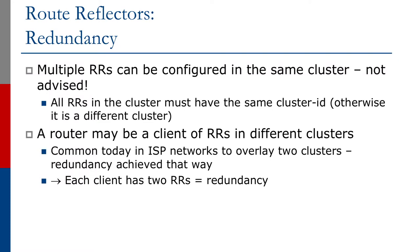Multiple route reflectors can be configured in the same cluster, but in practice this has been quite problematic. It works fine as long as the two route reflectors have a direct physical connection between each other, which is usually the case. However, problems arise when route reflectors are not directly connected and have intermediate layer 3 devices between them, which can cause all kinds of BGP announcement problems and lack of connectivity for devices in the network.